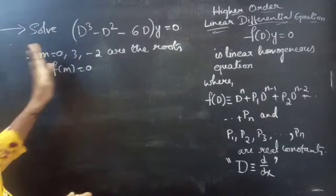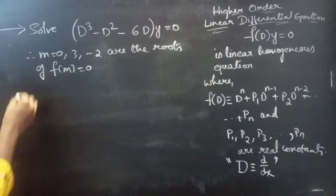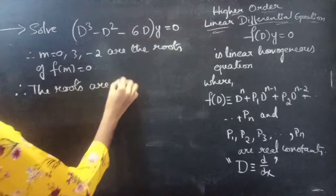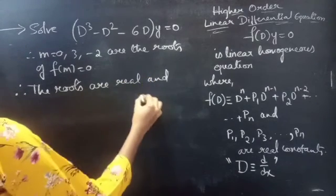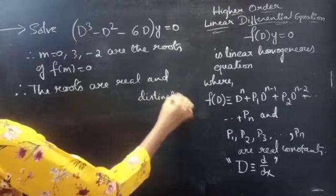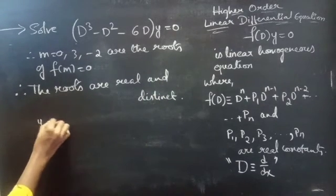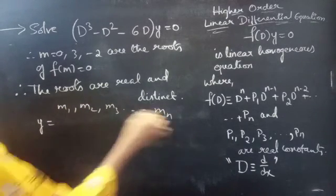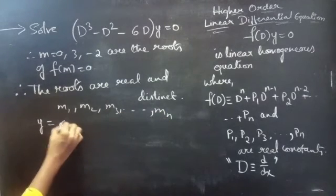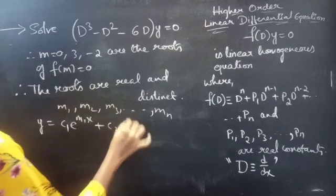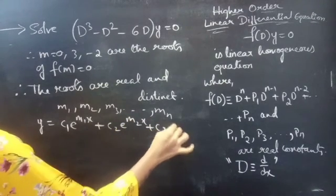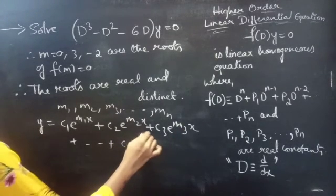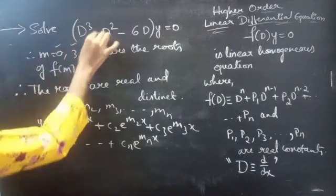Observe the roots: you are having 0, 3, and minus 2, which are distinct and also real. Therefore the roots are real and distinct. Our general solution will be: if the roots m1, m2, m3, ..., mn are real and distinct, then the solution is c1 e to the power m1x plus c2 e to the power m2x plus c3 e to the power m3x, and so on up to cn e to the power mnx.